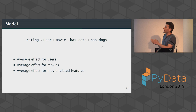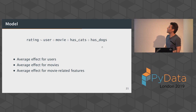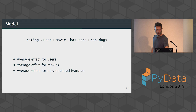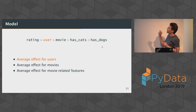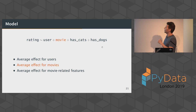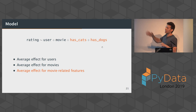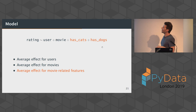I pass this to my model. Using an R-inspired formula notation: the rating is a linear function of user, movie, whether the movie has cats, and whether the movie has dogs. So I'm building a sort of recommendation system. Having one coefficient per user tells me the average effect — this user tends to rate movies around 3.5 stars. Then you have a second effect for movie — irrespective of the user, this movie tends to get around four stars. And you have average effects for movie-related features like cats and dogs — the coefficient for 'has cats' tells me the average rating for movies containing cats.